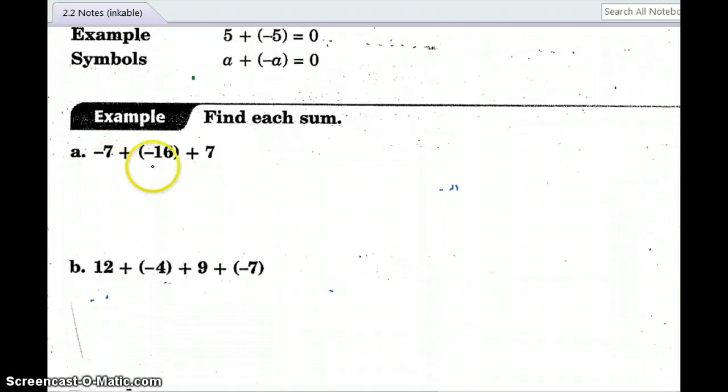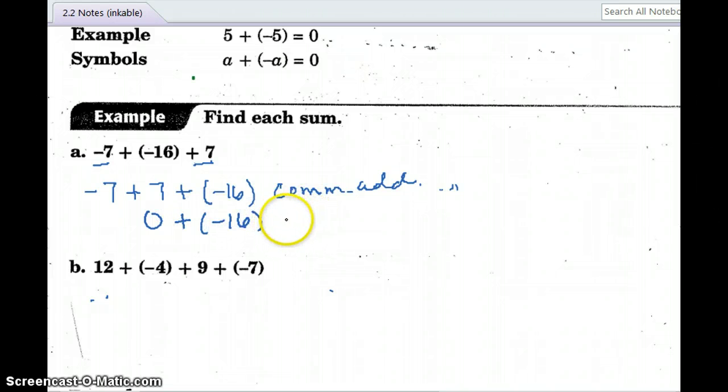Here's what an additive inverse property looks like. The additive inverse property says positive 5 plus negative 5 equals 0. How is this going to come in handy? Well, when you tackle a problem that has more than two integers, negative 7 and positive 7 are opposites. So let's use the good old commutative property to rearrange this problem. The commutative property of addition.